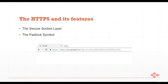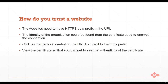Regarding HTTPS and SSL: the green colored HTTPS in the URL bar shows the site uses HTTPS encryption. The padlock symbol shows the site is secure and trusted. To verify a website, it should have HTTPS as a URL prefix, and you can click the padlock symbol to view the certificate showing the organization's identity and authenticity.